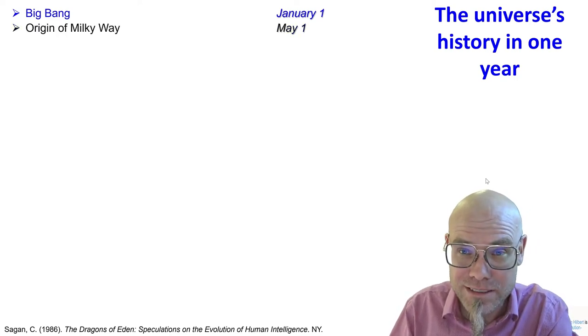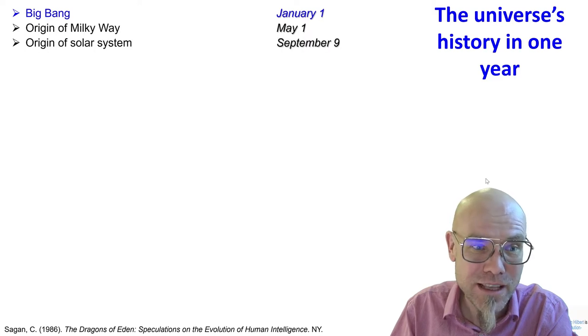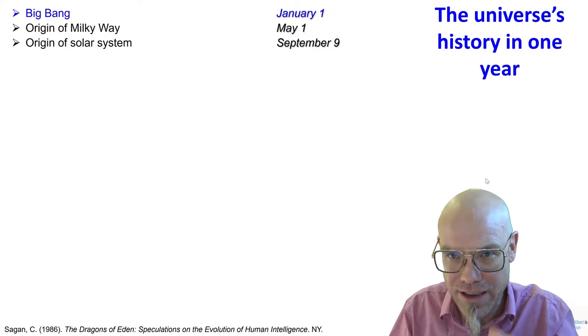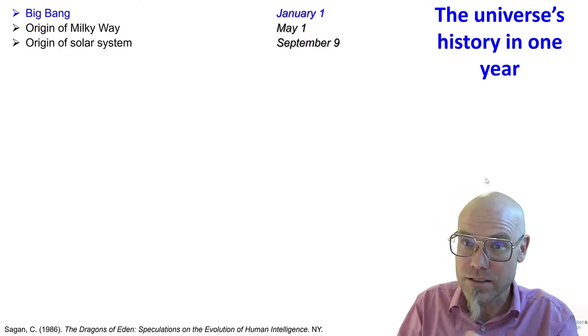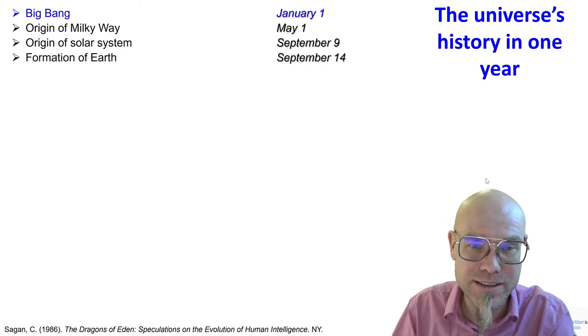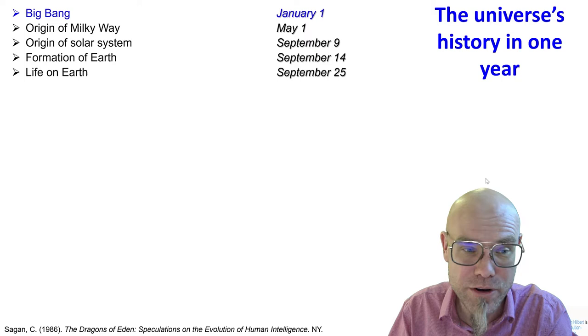Then the Milky Way came around on May 1st. The winter was over and the Milky Way got constructed at the beginning of spring. The solar system, our solar system, started already in fall, September 9th. Formation of Earth, September 14th. Life on Earth, September 25th.